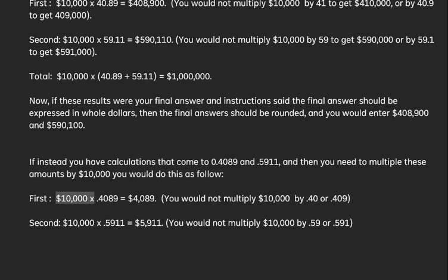First, $10,000 x 0.4089 equals $4089. You would not multiply $10,000 by 0.40 or 0.409.